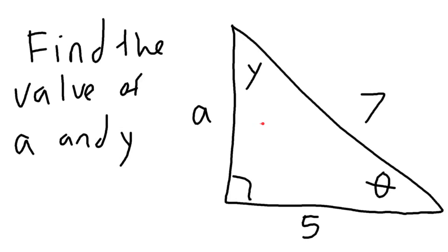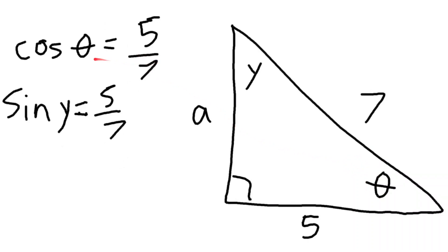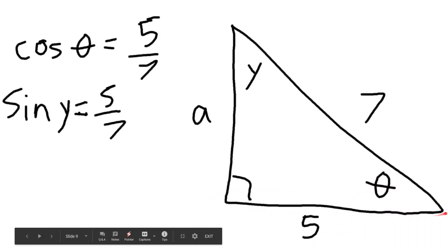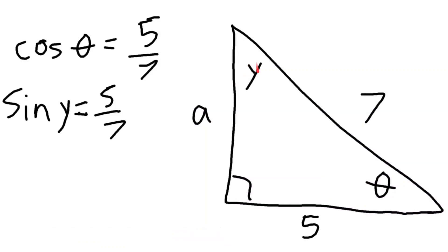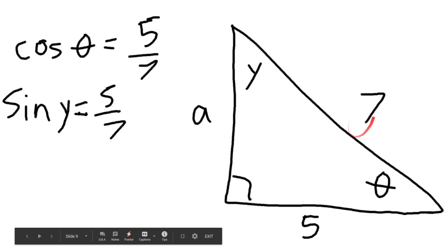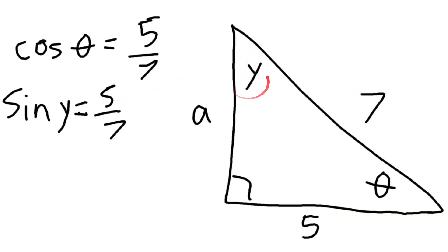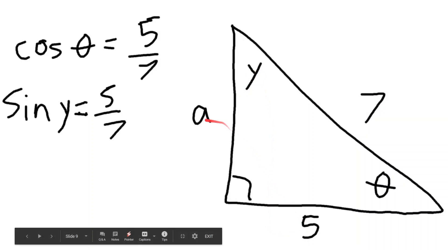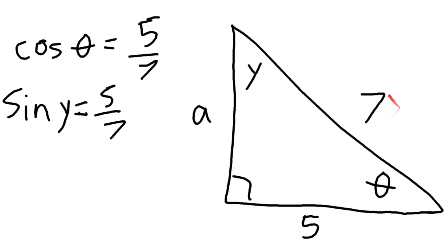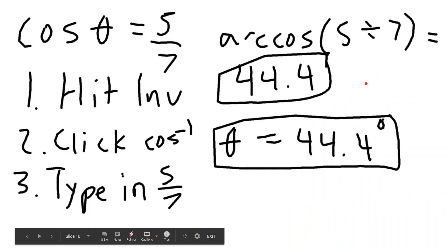Here's an easy trigonometry problem — we need to find the value of a, y, and theta. We can say cosine of theta equals 5 over 7, because theta is sandwiched between the side of length 5 and the hypotenuse of length 7, so it's adjacent over hypotenuse. Sine y equals 5 over 7 because 5 is on the opposite side and 7 is the hypotenuse. I'm using 5 and 7 because they are the known variables.